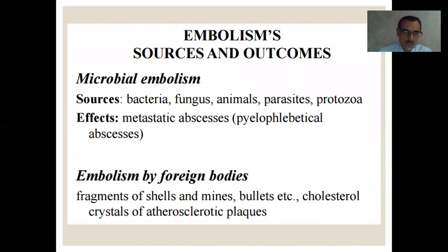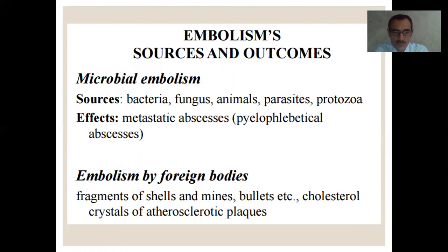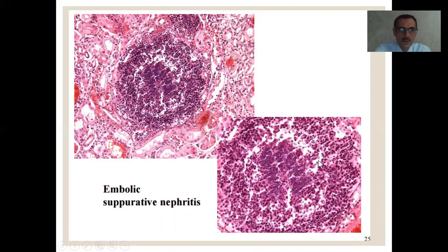Microbial embolism: the sources are bacteria, fungi, animals, parasites, protozoa — and they are fixed as metastatic abscesses, such as pyophlebitic abscesses. Embolism by foreign bodies includes fragments of shells and mines, bullets, cholesterol crystals, or atherosclerotic plaques. Here you see the biopsy taken from the kidney — in the glomeruli we see inflammation — we call it suppurative nephritis — this is embolic suppurative nephritis.